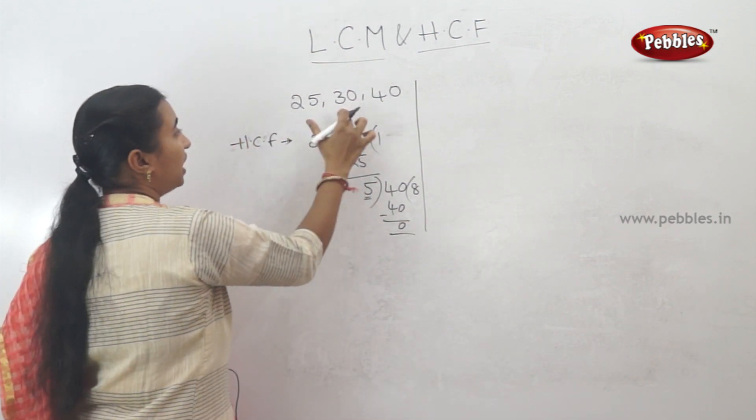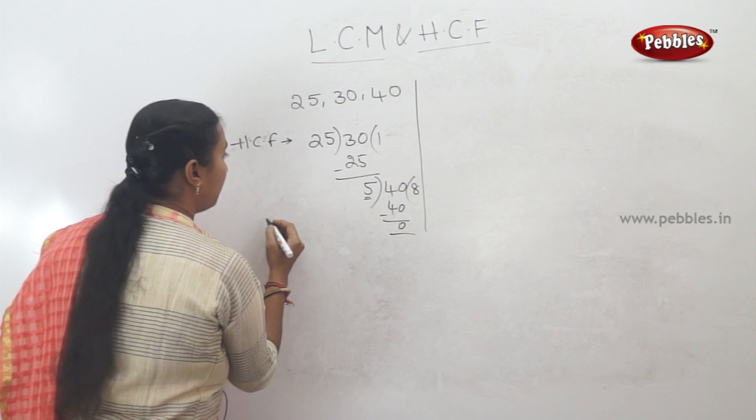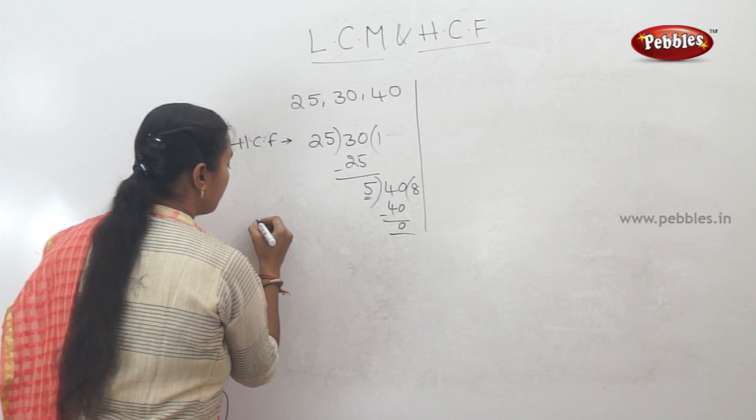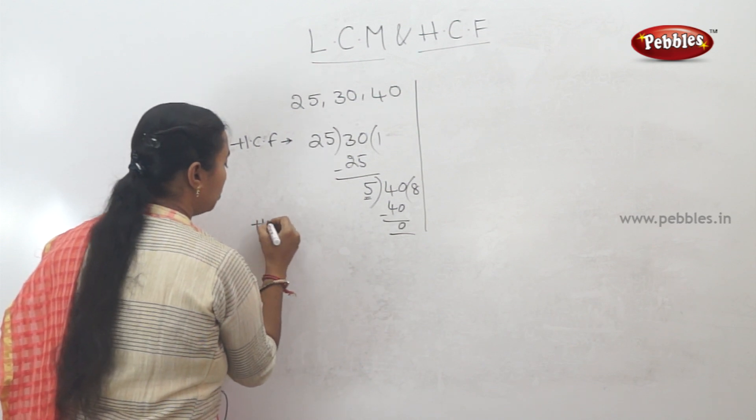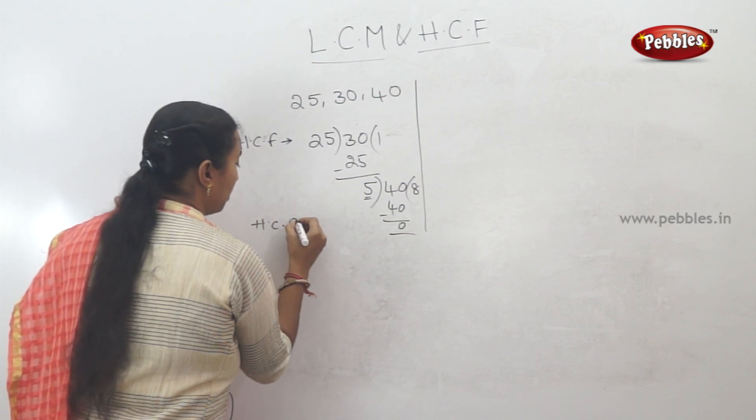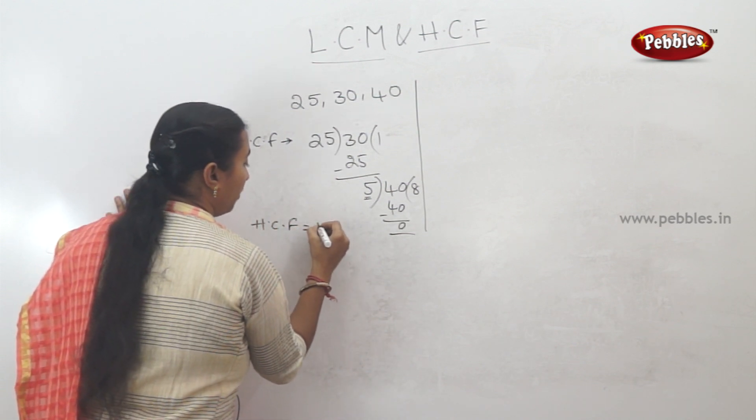We'll put the numbers 25, 30, and 40. We need to find the HCF. The answer is 5.